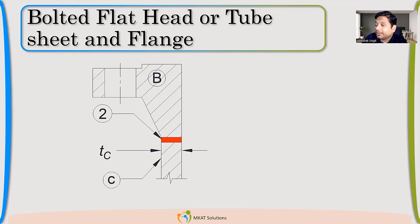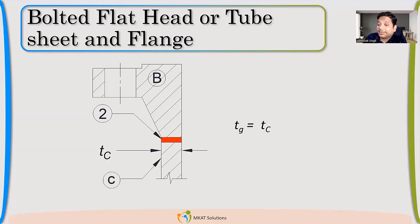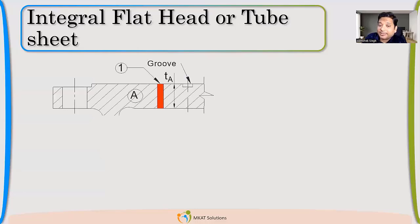For a flange getting welded with a nozzle or shell, remember that nozzle thickness always means nozzle neck thickness, not the flange itself. For weld neck flanges, the nozzle neck C typically has the lesser thickness. So for that weld the governing thickness is tc — the nozzle neck thickness — since it is the thinner of the two welded parts.